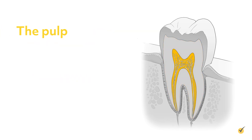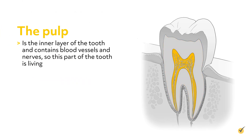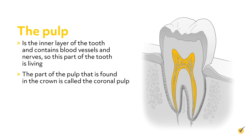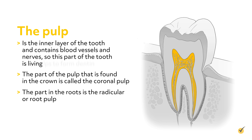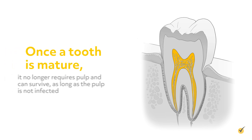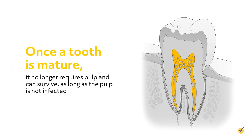The pulp is the inner layer of the tooth and contains blood vessels and nerves, so this part of the tooth is living. The part of the pulp found in the crown is called the coronal pulp, and the part in the roots is the radicular, or root pulp. Pulp helps to form dentin, and once a tooth is mature, it no longer requires pulp and can survive as long as the pulp is not infected.